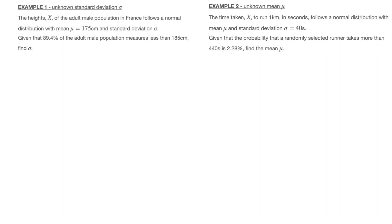Before writing down the three-step method, I always make a note of which parameter is given. In this case we're given the mean mu which equals 175 centimeters, and the unknown parameter is the standard deviation sigma. I also note the observation value — 185 centimeters — and its corresponding area under the bell curve, which is 89.4%, since that percentage corresponds to an area under the bell curve for this normal distribution.